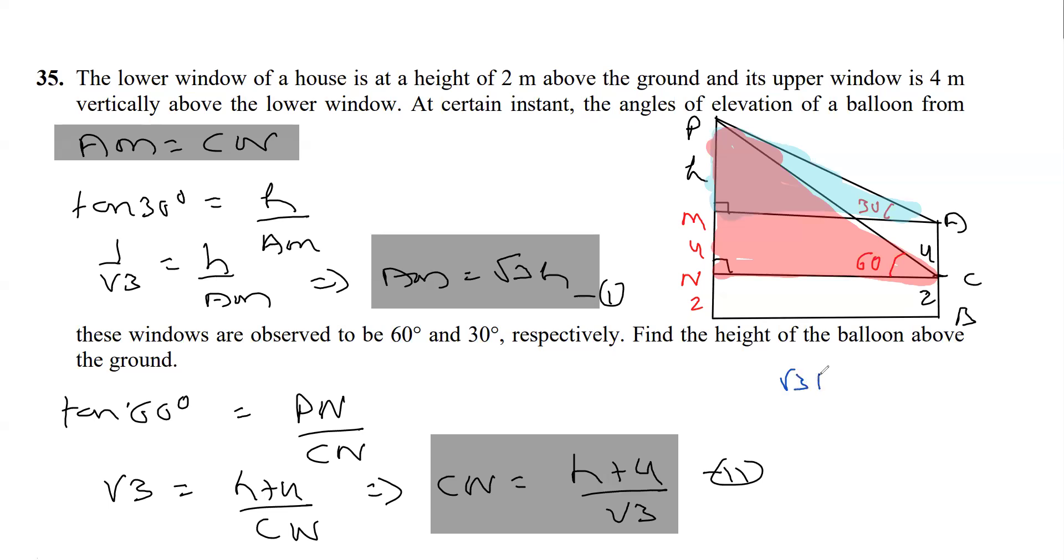I can write root 3 H is equal to H plus 4 over root 3. By cross multiplication, root 3 into root 3 is 3H equals H plus 4. Transposing H to the left hand side, it is 2H equals 4, which implies H equals 2.